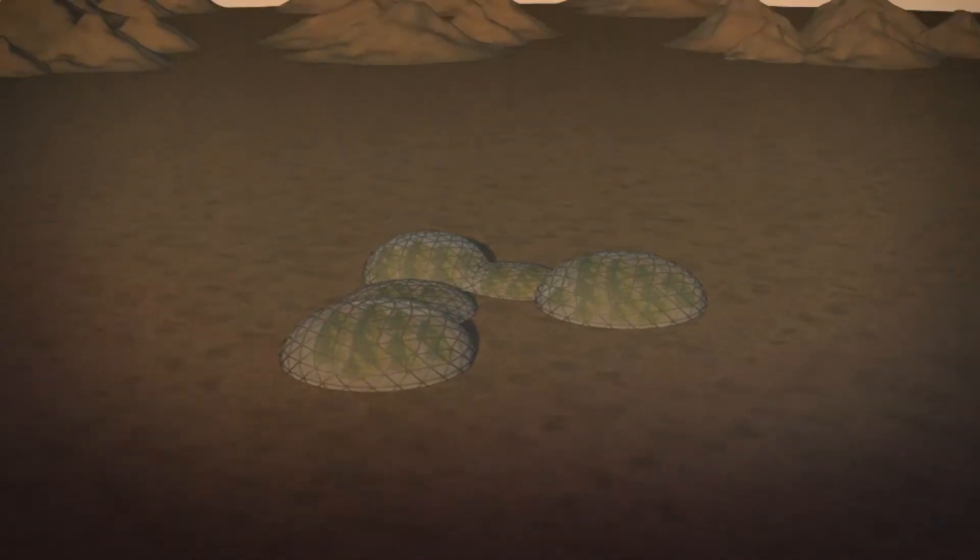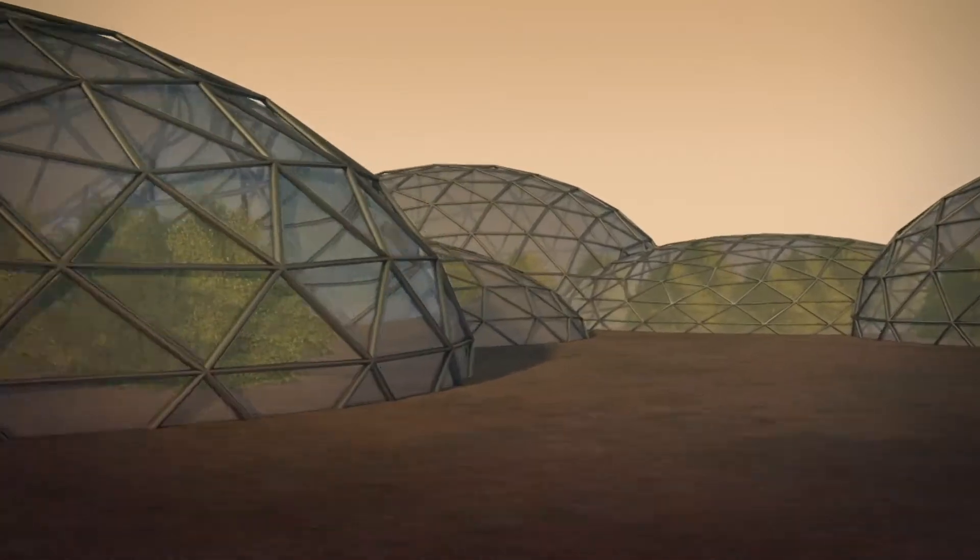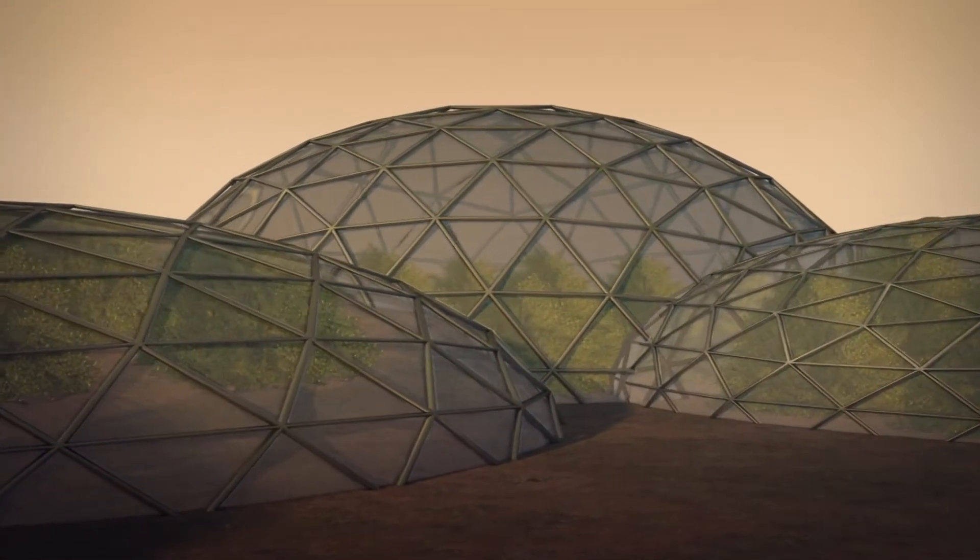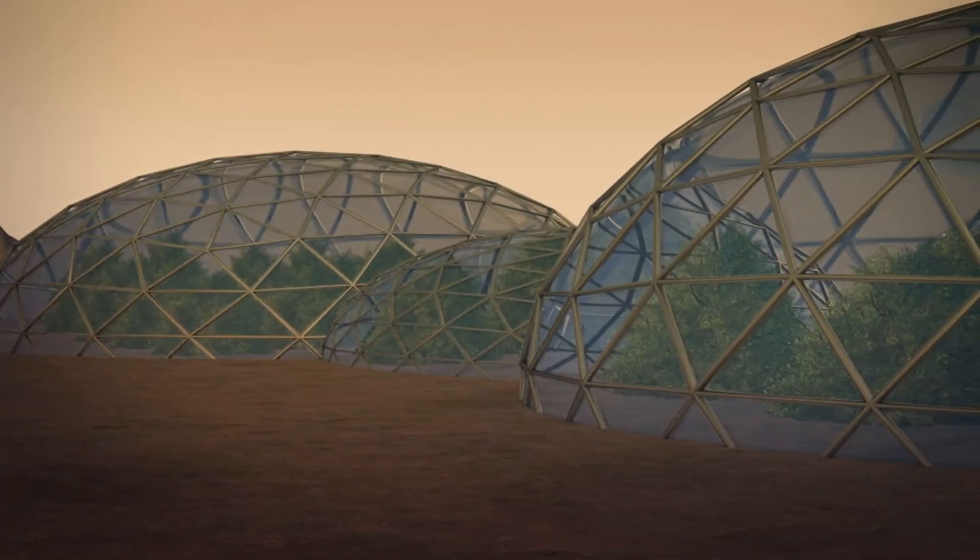The UAE is planning to build a $136 million city here on Earth called Mars Science City, which consists of interconnected dome structures that will span 1.9 million square feet.